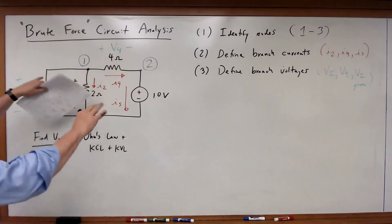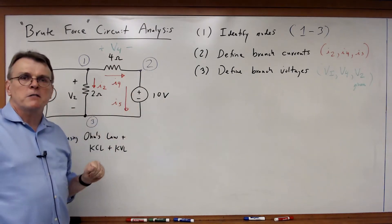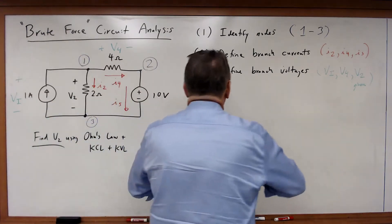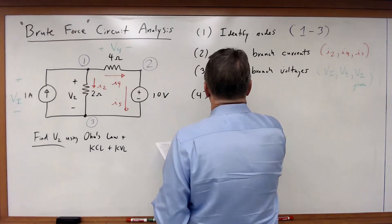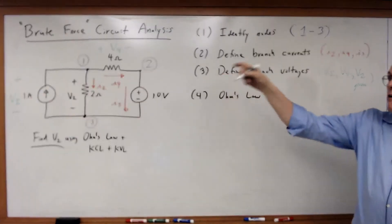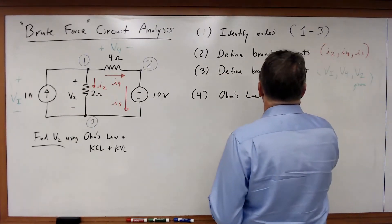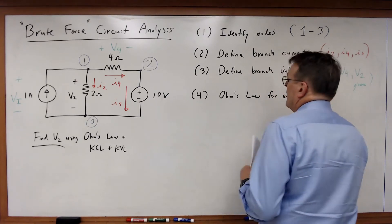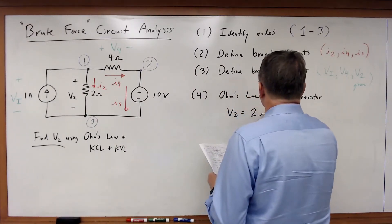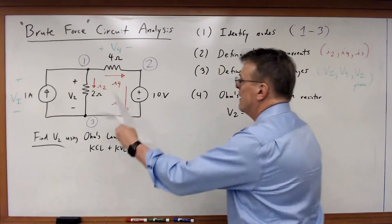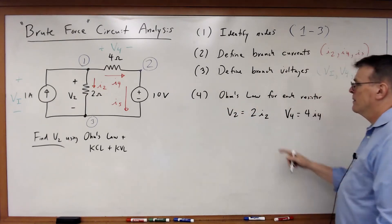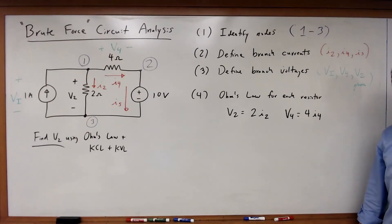Next step: I've defined all of the unknown quantities in the circuit for each element, for each branch. Now let's go through and write our equations. First, Ohm's Law — let's write Ohm's Law for each resistor. V2 is equal to 2 times I2, and V4 is equal to 4 times I4. Two resistors, two Ohm's Law equations.